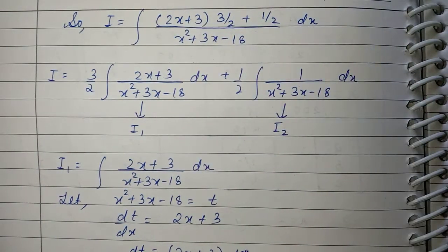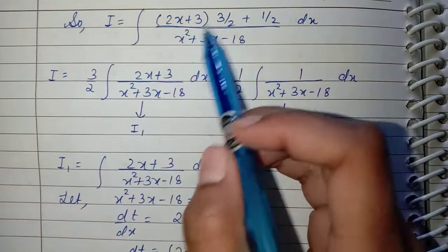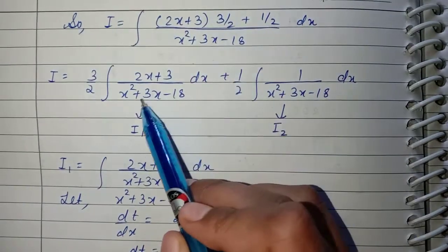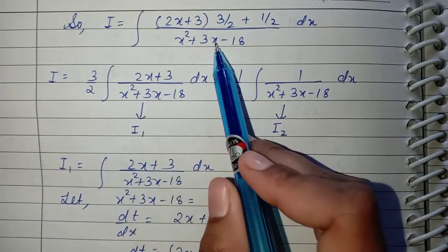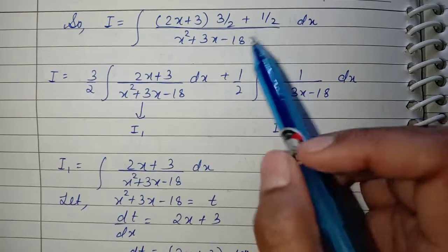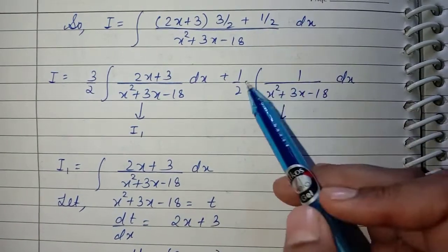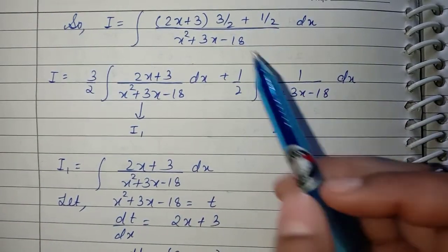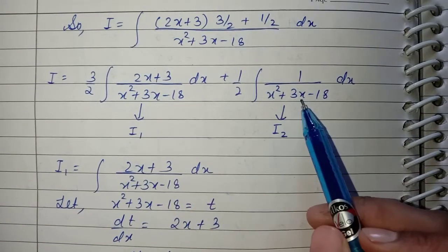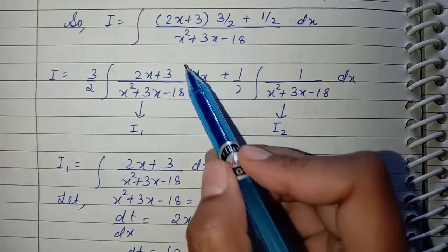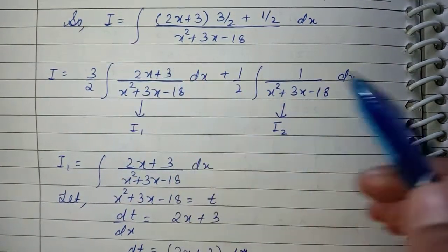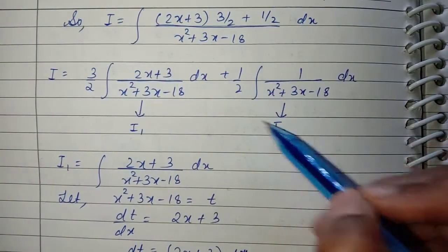We break the integral into two parts. The first part is (3/2)·∫(2x+3)/(x²+3x-18) dx, and the second part is (1/2)·∫1/(x²+3x-18) dx. We let the first part be I1 and the second part be I2, and we will solve them separately.